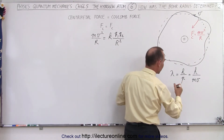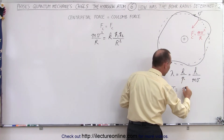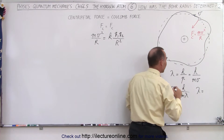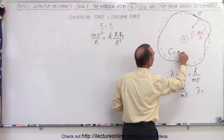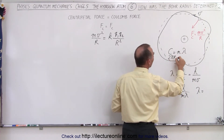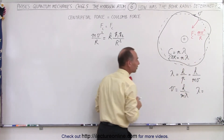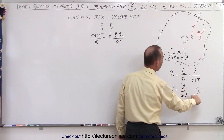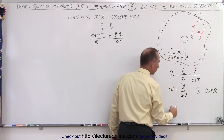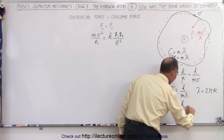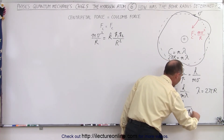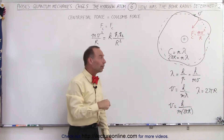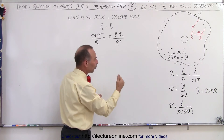Let's go ahead and isolate the velocity, so we can write that the velocity of the electron equals h divided by m times lambda. We know that the circumference had to equal an integer number of wavelengths, which means 2πr must equal n times lambda. Assuming n equals 1 for the innermost orbit, we set 2πr equal to lambda, giving us velocity equals h divided by m times 2πr. For the next orbits, n would be 2, 3, and so on, but we'll solve for n equals 1.